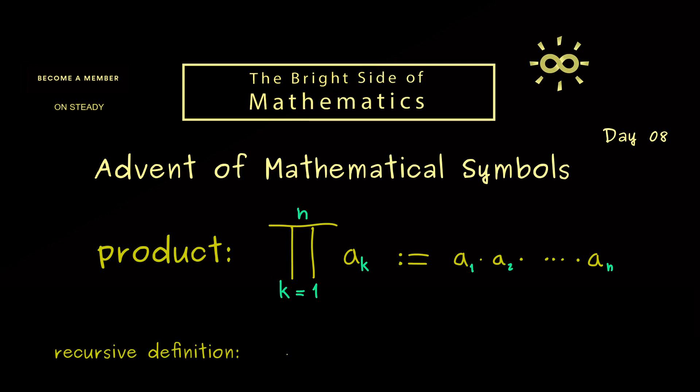This means that we first have to explain what the empty product should be. In other words, what happens when we set n to 0. Then the explanation from above does not make any sense because there are no numbers involved. Indeed, the only meaningful thing would be to set the empty product to 1, because when we multiply with 1 we don't change anything.